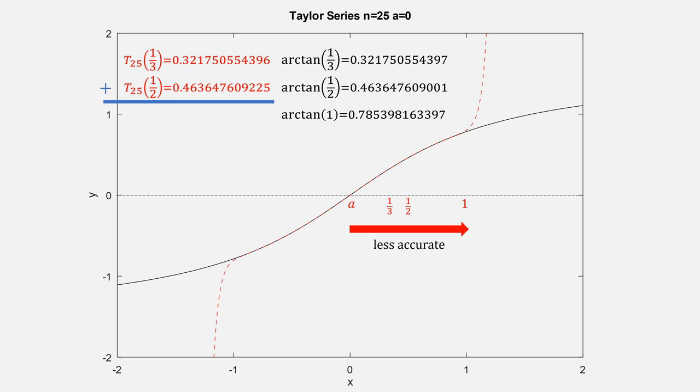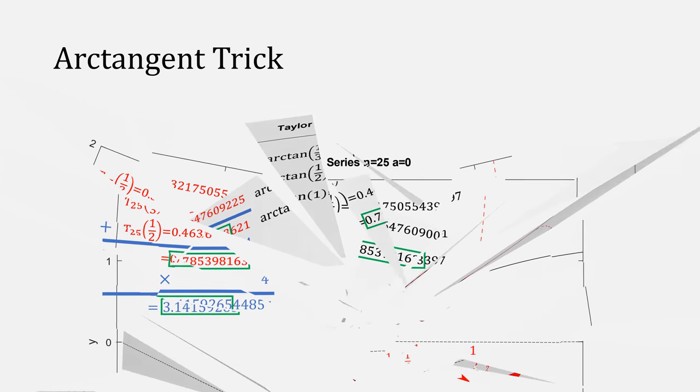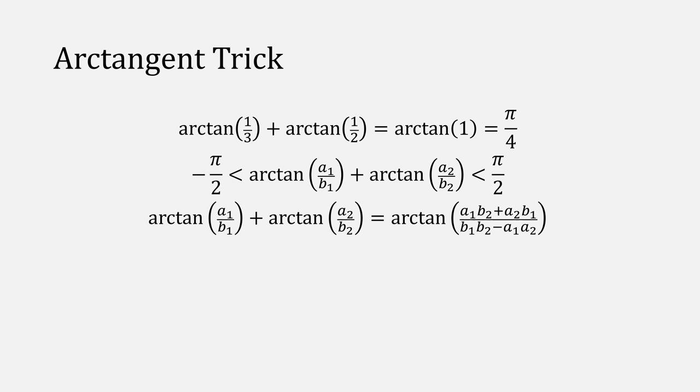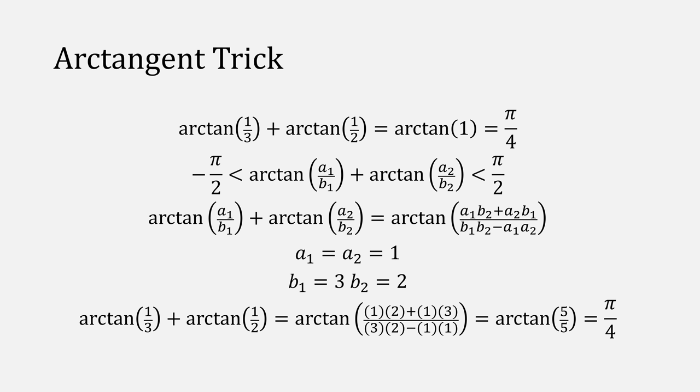Indeed, adding these two terms gives us a number pretty close to the arctangent of 1. Multiplying it by 4, and we get a number close to Pi. Mind blown. When we're summing arctangent angles, this equation is true. That's because when our sum is between negative Pi over 2 and Pi over 2, this equation holds. As an example, let's plug in our numerators of 1 and our denominators of 3 and 2. This means that our arctangent is equal to 5 over 5, also known as the arctangent of 1, which is Pi over 4.